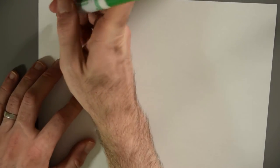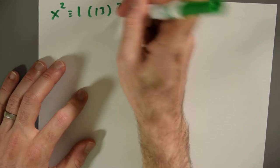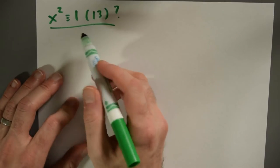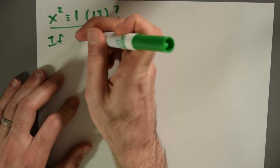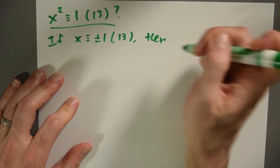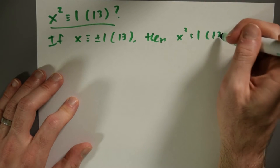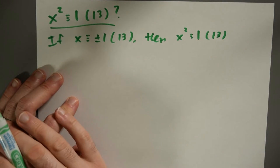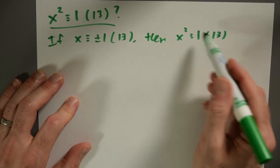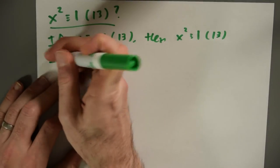When is x squared congruent to 1 modulo 13? I can think of some examples where I know this works. If x is plus or minus 1 modulo 13, then it is the case that x squared is 1 modulo 13. Now I'd like to go the other way — to say that if x squared is 1 mod 13, then this is what x has to be, so I've found all possibilities.